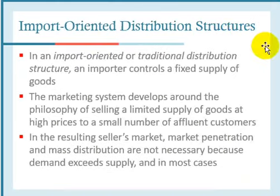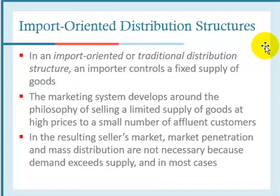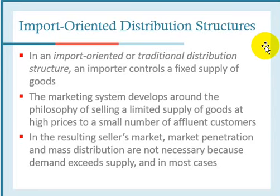Starting with the first one — import-oriented or traditional distribution structure. In this system, the importer controls a fixed supply of goods. The marketing system develops around the philosophy of selling a limited supply of goods at high prices to a small number of affluent customers. The strategy focuses on selling few products to limited customers. With a limited supply of goods, you can raise the price and sell to a small number of affluent customers.